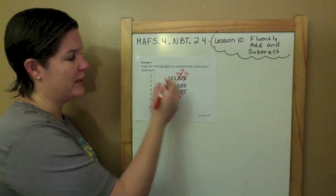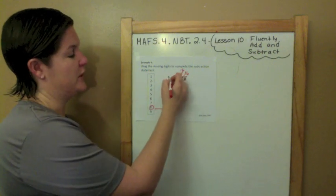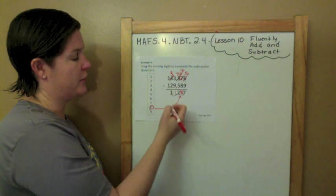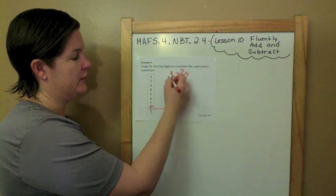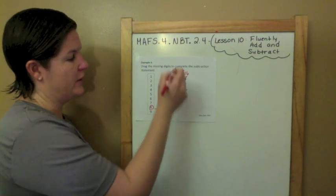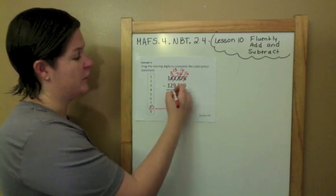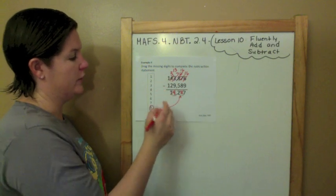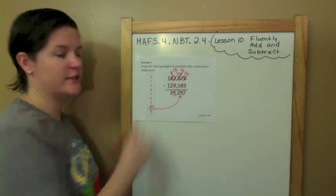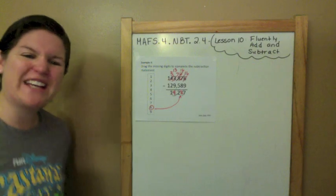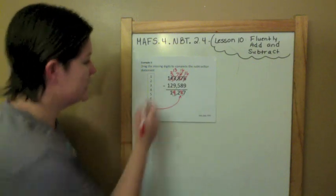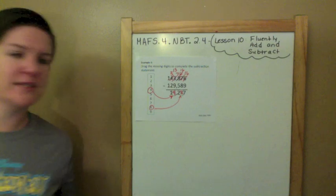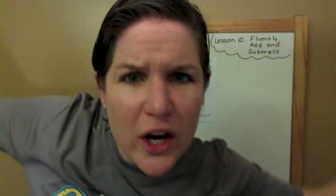3 minus 9 — can't do it — regroup from the left: that becomes 3, and he becomes 13. 13 minus 9 is 4. 3 minus 1 is... wait: 3 minus 1 is 1, and 1 minus 1 is 0. We got it! So this 4 drags right into that box, and we are done.